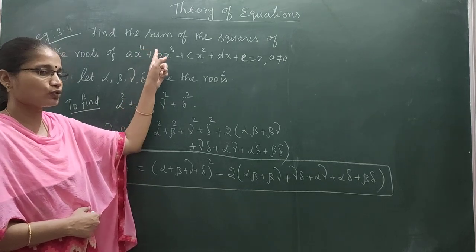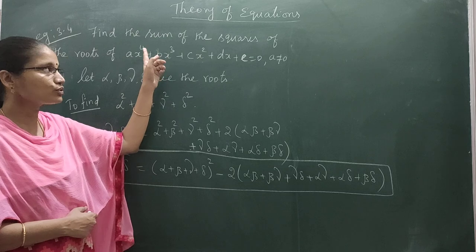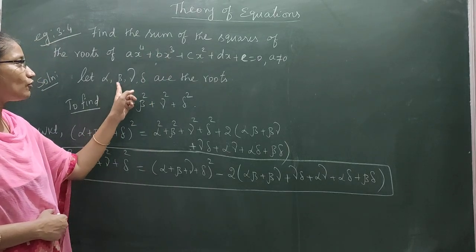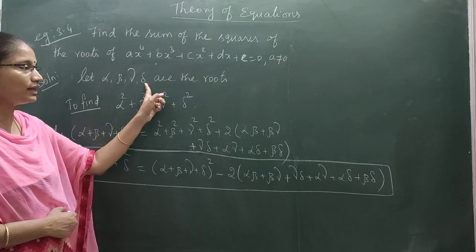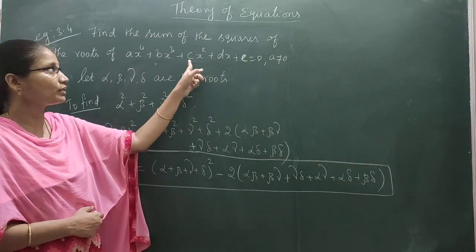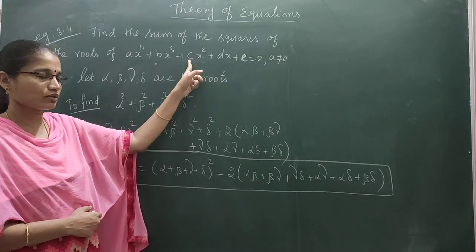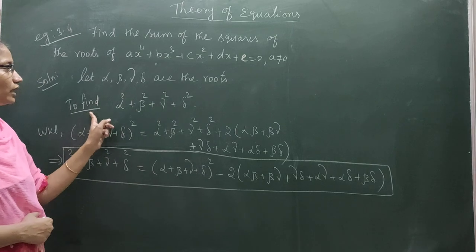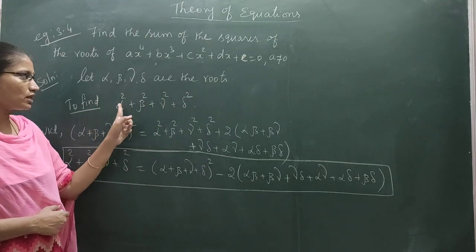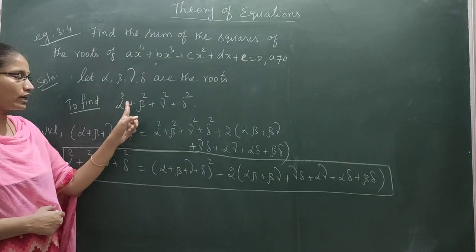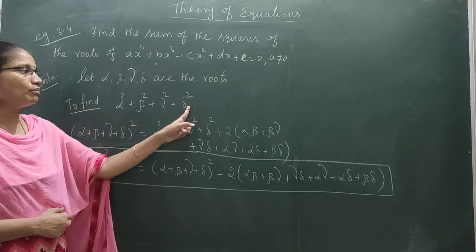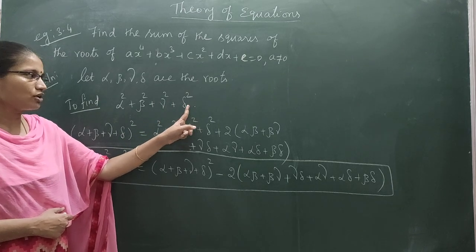Let the 4 roots be alpha, beta, gamma, and delta. These are the 4 roots of this polynomial equation. We have to find the sum of the squares of the roots, that is: alpha² + beta² + gamma² + delta².